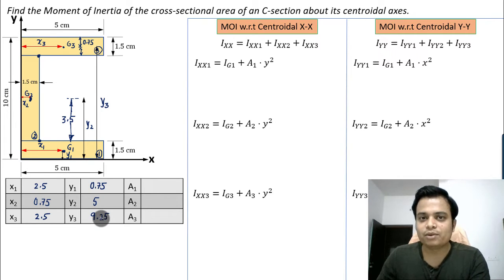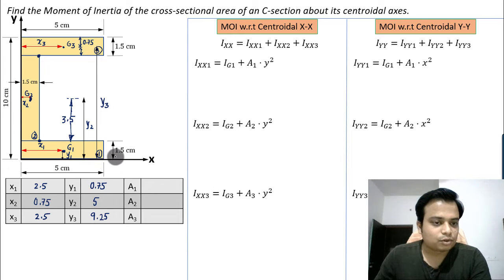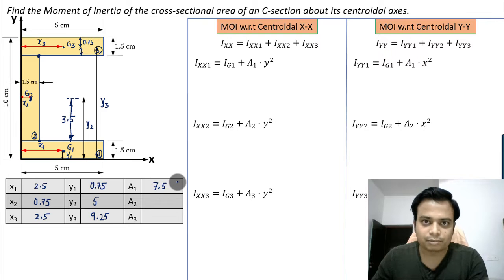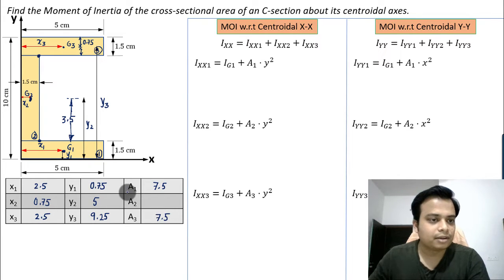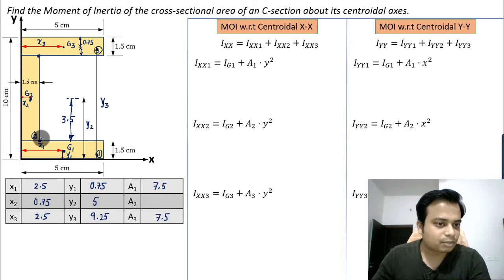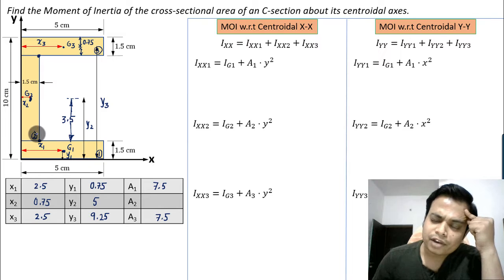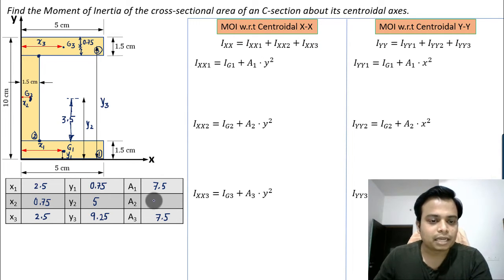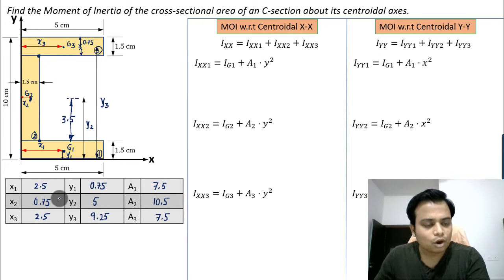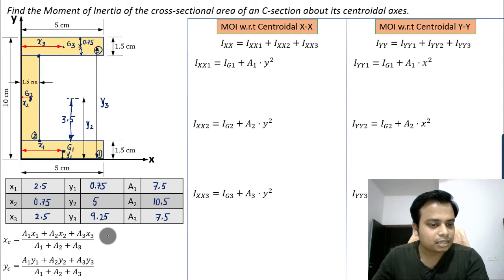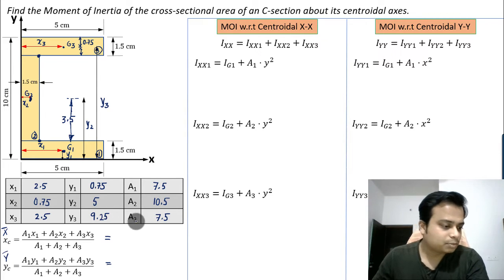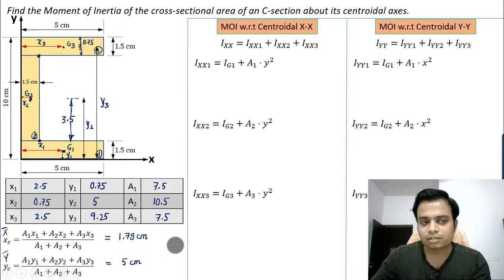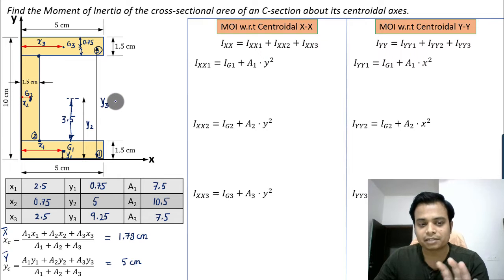Now we calculate the areas. Area of rectangle 1 is 5 × 1.5 = 7.5 cm². Rectangle 3 is identical, so it also has area 7.5 cm². Rectangle 2 has height 7 and width 1.5, so 7 × 1.5 = 10.5 cm². Plugging all x, y, and area values into the centroid formulas gives x̄ = 1.78 cm and ȳ = 5 cm. Since the C-section is symmetrical about the horizontal axis, half of 10 also gives ȳ = 5.